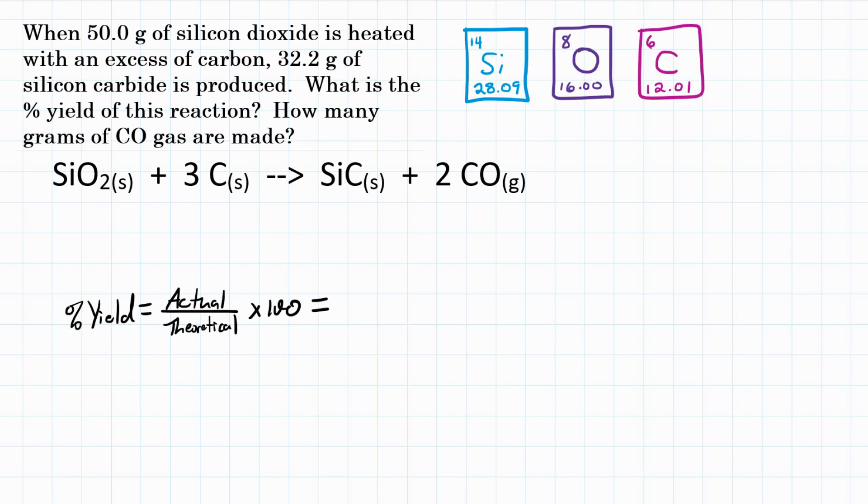All right, everybody. Question states, when 50.0 grams of silicon dioxide is heated with an excess of carbon, 32.2 grams of silicon carbide is produced. First, what is the percent yield of this reaction? And second, how many grams of CO gas are made? So the problem gives us 50.0 grams of SiO2, silicon dioxide, and it says in the reaction, we actually make 32.2 grams of SiC.